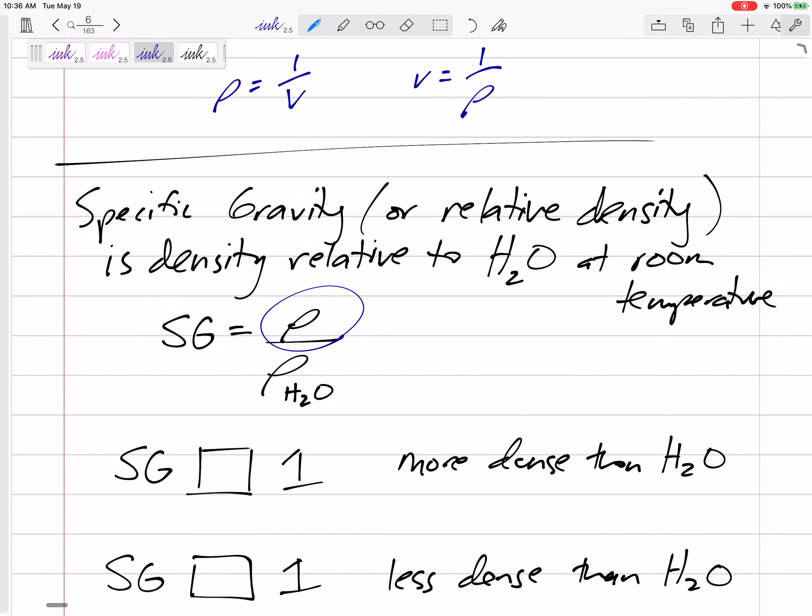So specific gravity is the density of what you are interested in, or whatever material, divided by the density of water. Or maybe we'll do it this way: the density of a material is its specific gravity times the density of water at room temperature. Maybe box that in. That one is more useful.